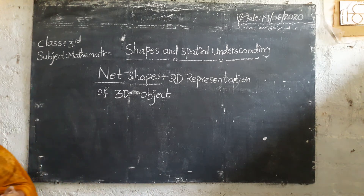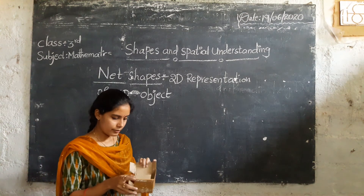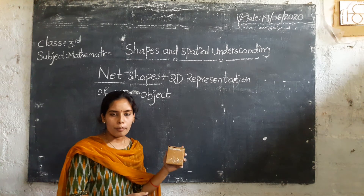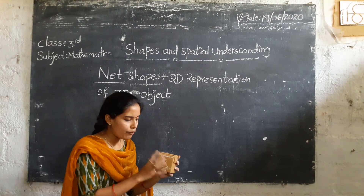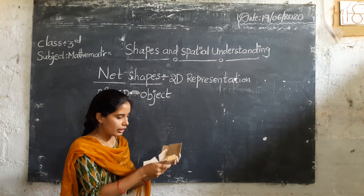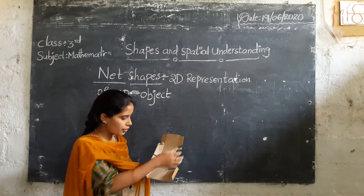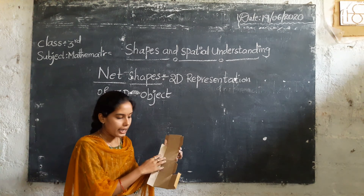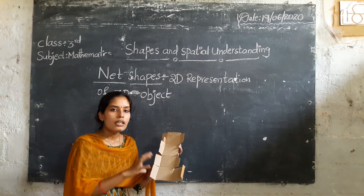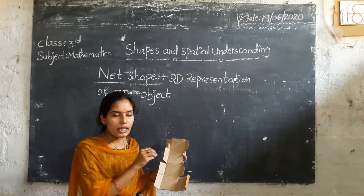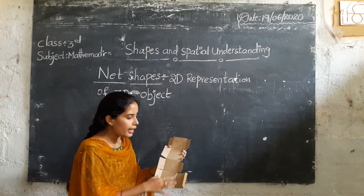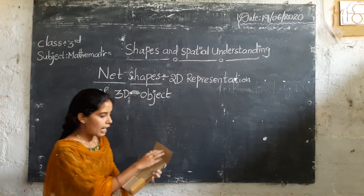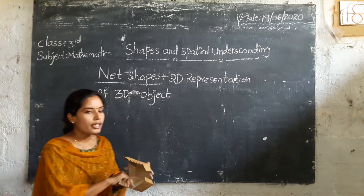Let us take one more example. Children, once you have to observe — which shape is it? It is a cube. If I open this box, which 2D figure do you observe? It is a square. This is the outline part of the given object. If you make a 3D object, it will depend upon a 2D object. This unfolded 2D shape of the 3D object — these types of outlines are called net shapes.